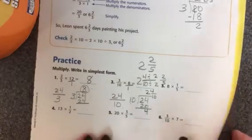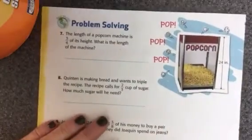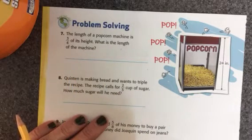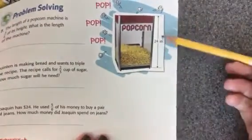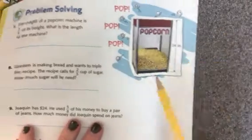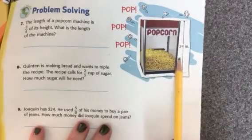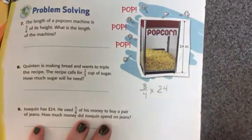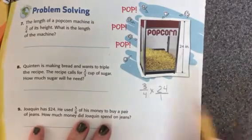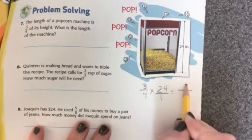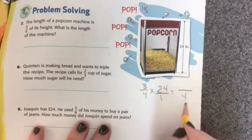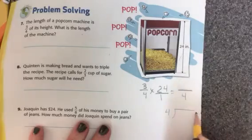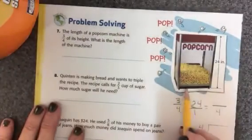You'll go ahead and work on the rest of this page. On the back, the first problem solving problem says the length of a popcorn machine is 3 fourths of its height. What is the length of the machine? I'm looking at this popcorn machine and I can see the height is 24 inches and the length is 3 fourths of this. So to figure that out I'm going to take 3 fourths times 24. I'll multiply 3 times 24, write the answer, then 4 times 1, write the answer. Whatever the number is will go in a division box and divide by 4, and my answer will be what the length of this machine is.